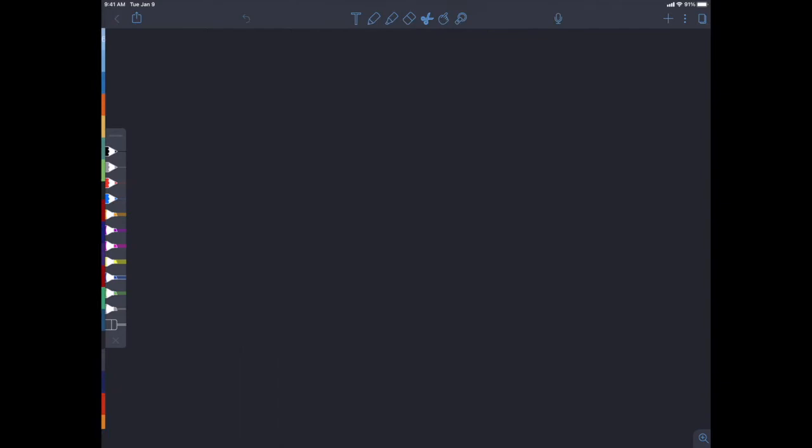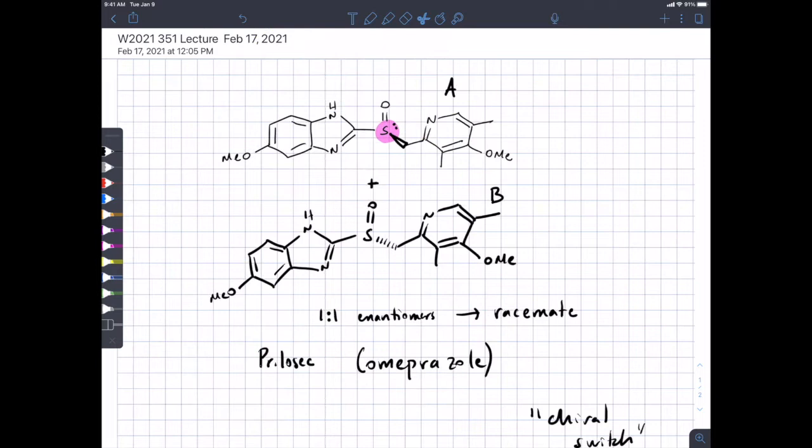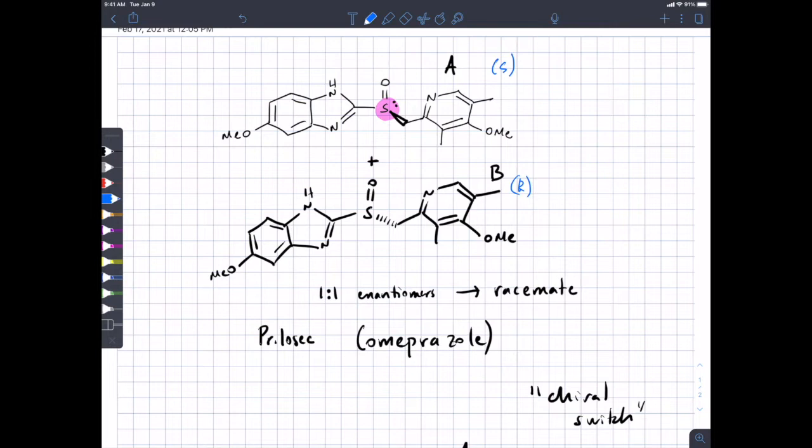Shown up here at the top, molecule A is the S isomer. The R enantiomer is pictured below, and this was initially marketed and sold as a one-to-one mixture of enantiomers, or racemate.